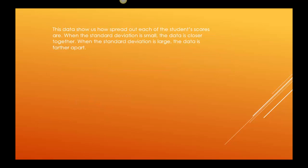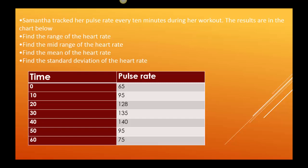So this data shows us how spread out each of the student's scores are. When the standard deviation is small, the data points are close. When the standard deviation is large, the data is farther apart. So let's say Samantha tracked her pulse rate every 10 minutes during her workout. The results were then charted below. We want to find the range of her heart rate, the mid-range of her heart rate, the mean of her heart rate, and the standard deviation of her heart rate.